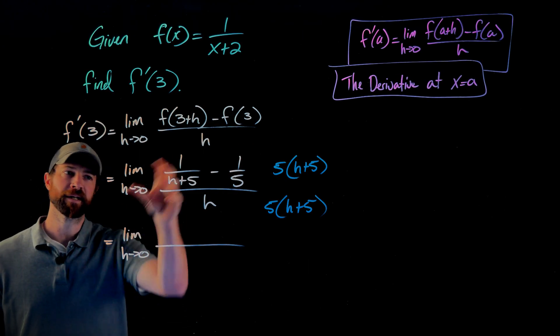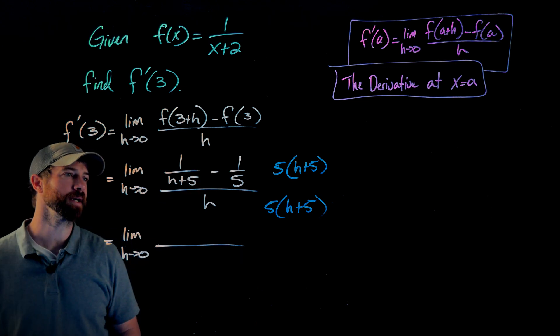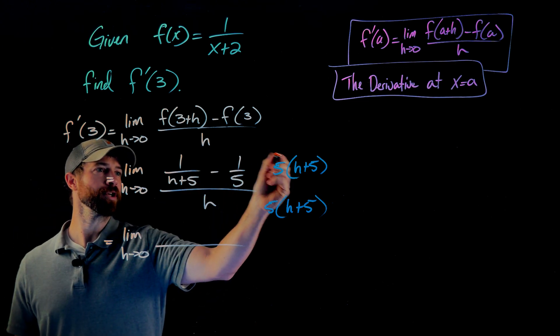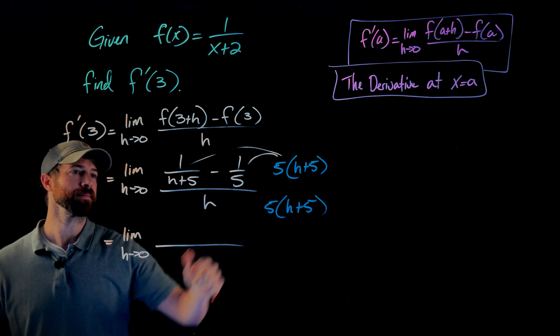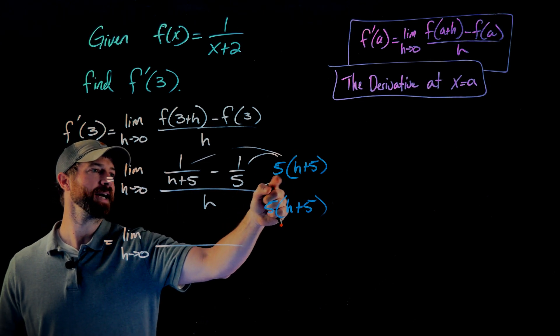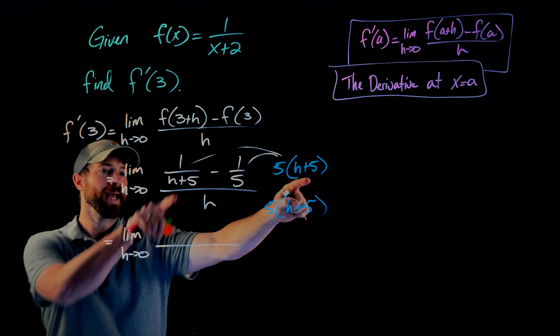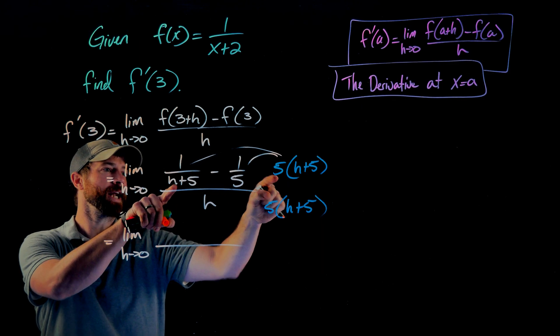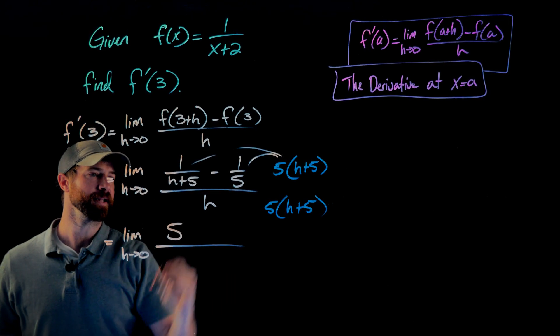This move will always work in clearing the fractions in the numerator here. What I need to do is distribute this to both of these terms. When I multiply this term right here by 5 times h plus 5, the h plus 5s cancel, and I'm just going to be left with 5 in this first term.